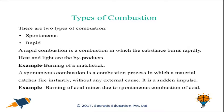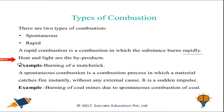Let's proceed to types of combustion. There are two types: spontaneous and rapid. Rapid combustion is a combustion in which the substance burns rapidly, meaning at a good rate or with good speed. In rapid combustion, there are two by-products: heat and light. One example is the burning of a matchstick, which produces heat and light as secondary products.